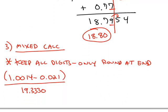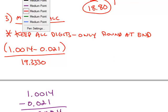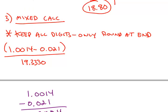A mixed calculation involves both of those rules in the same problem. The key to these is to keep all the digits in your calculator. You don't want to round until you get to the very end of the problem.